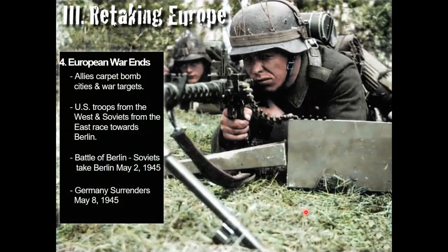At the Yalta Conference, they had set up parameters for Germany's unconditional surrender. After the Battle of the Bulge, the war in Europe quickly drew to a close. In late March 1945, the Allies rolled across the Rhine River into Germany. By the middle of April, a noose was closing in around Berlin — the Allied forces were squeezing Nazi Germany.